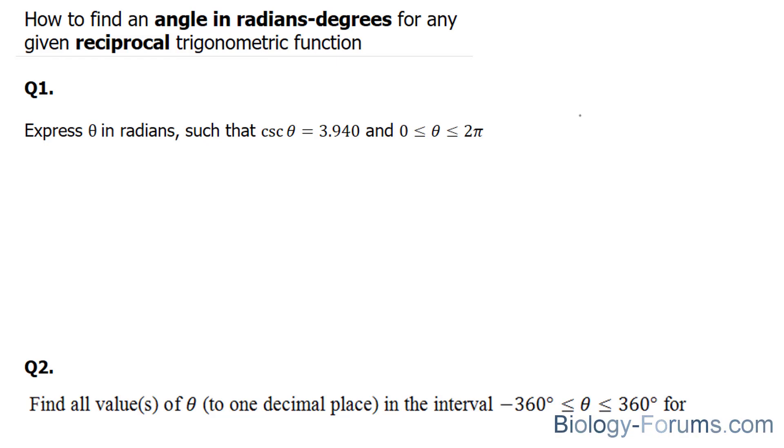In this demonstration, I'll show you how to find an angle in radians or degrees for any given reciprocal trigonometric function. Question one reads: express theta in radians such that cosecant theta equals 3.94 and it's between 0 and 2π.